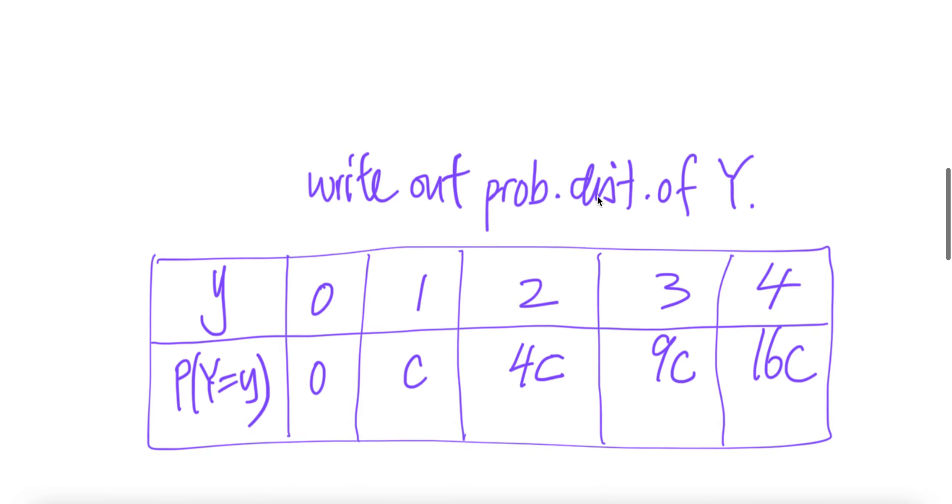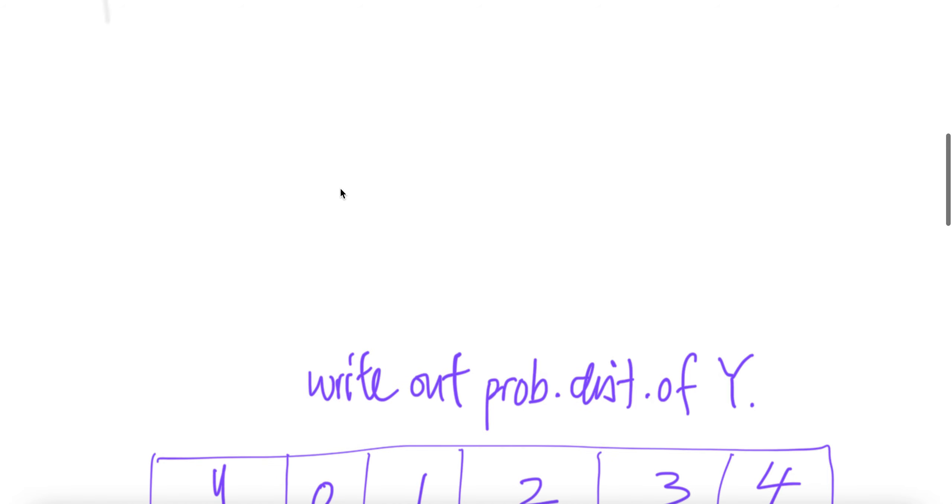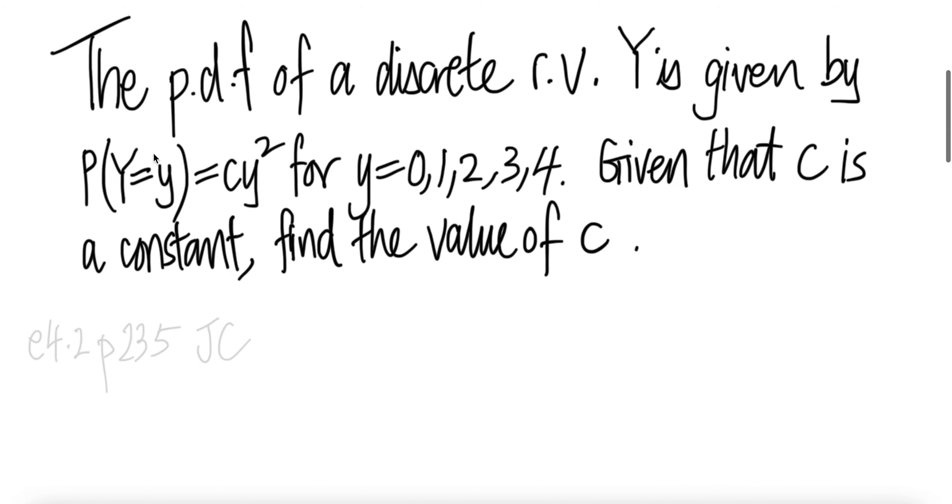Let us write out the probability distribution of Y. Y is given as 0, 1, 2, 3, 4, and the probability P(Y=y) equals c times y squared.